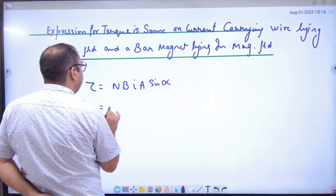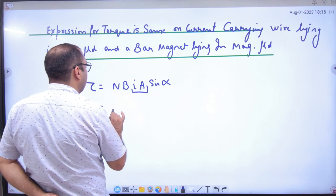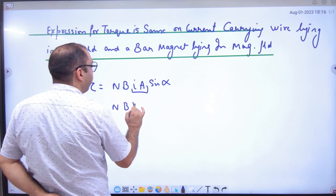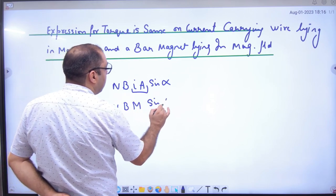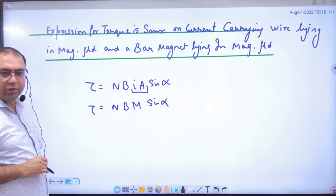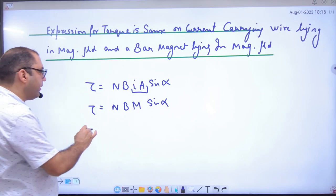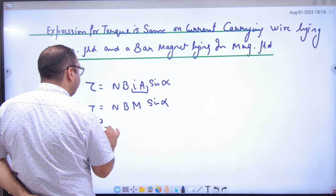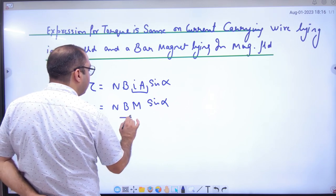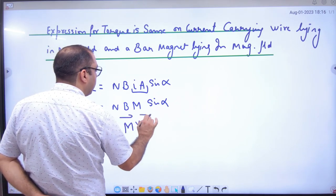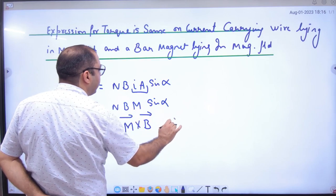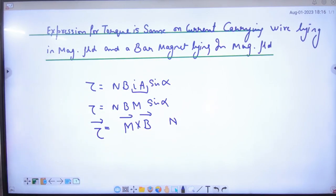And then we can do this. Current into area, what can we call? M, magnetic dipole moment of a current carrying loop. Current into area is capital M. So torque vector will be equal to M vector cross B vector, because we can write M cross B and then N is here. So this is torque expression in vector form.